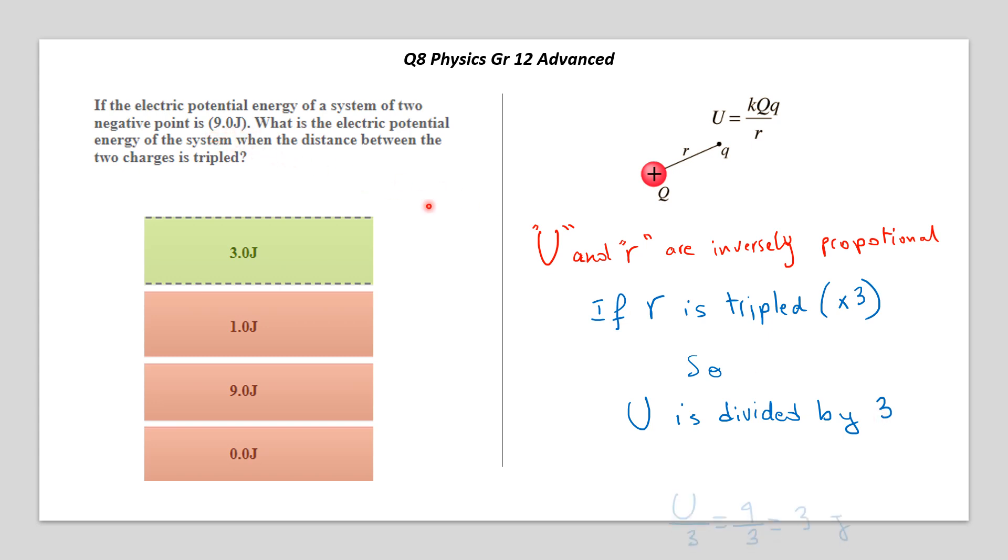Here what's given: U is 9 joules. The energy here is 9 joules, so we need to divide by 3 because we multiply the distance by 3. So 9 divided by 3 is 3 joules, and the first answer is the correct one.